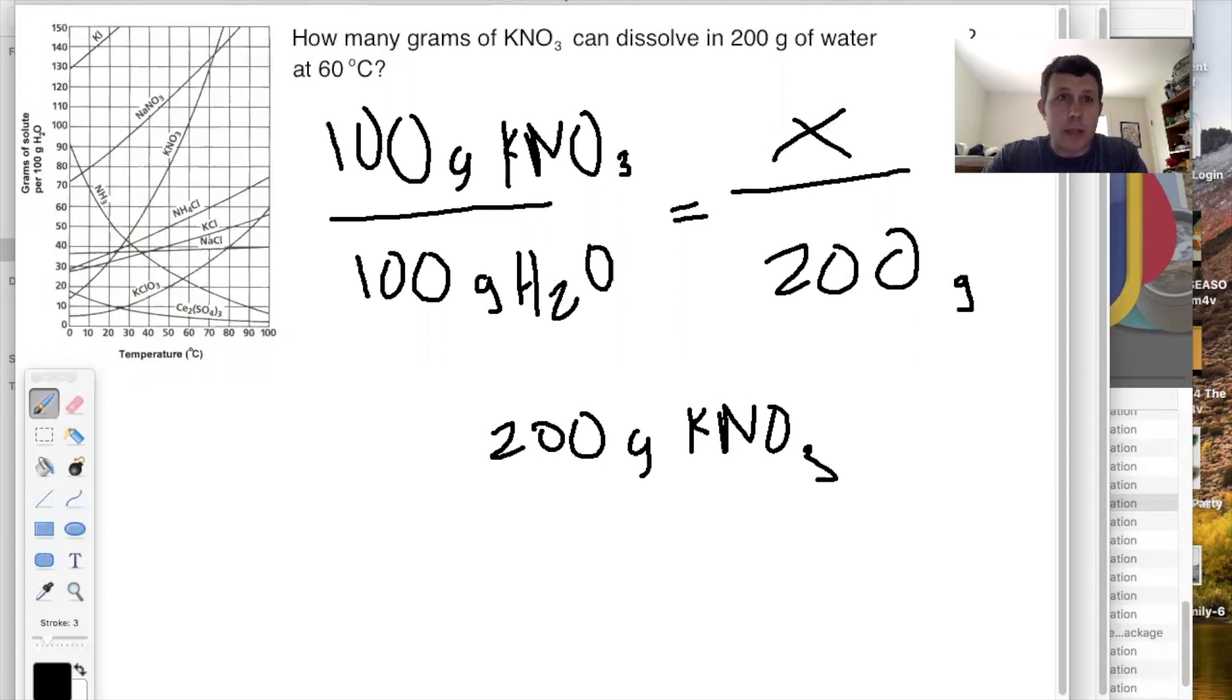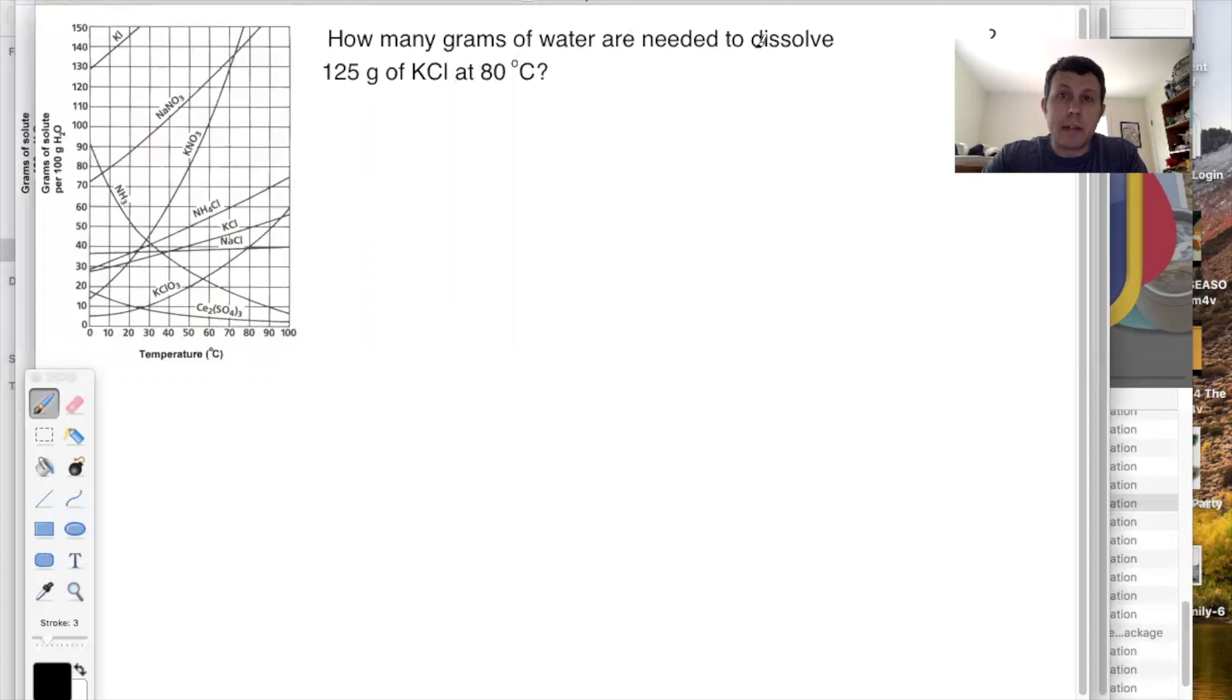And there's a lot of other ways we can ask this question. So here's another question. How many grams of water are needed to dissolve 125 grams of KCl at 80 degrees Celsius? So again, start by finding 80 degrees and KCl. And if I do, it looks like it matches at about 50 grams.